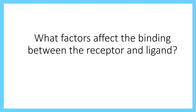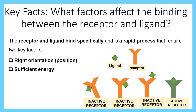What factors affect the binding between receptor and ligand? There are two main factors. The ligand and receptor binding is a rapid process, and the position at which the ligand binds to the receptor is key. The ability to maintain sufficient energy also leads on to signal transduction, where proteins and cascades take place in order to activate and elicit a response.